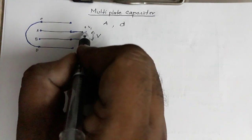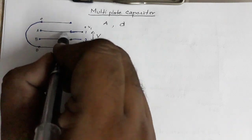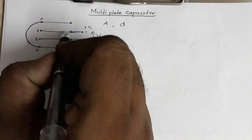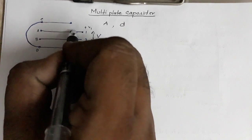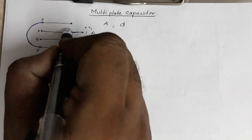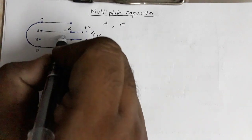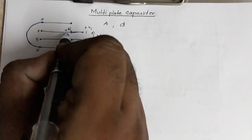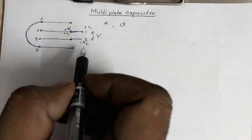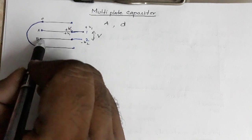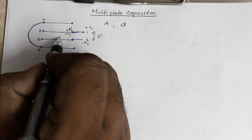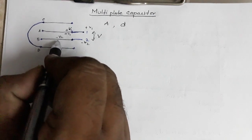Since plate A is connected to the source at potential V1, both sides of that plate will have the same potential — so this side is plus V1 and the other side is also plus V1. Similarly, plate B is supplied with potential minus V2, so both sides of plate B will be at minus V2.